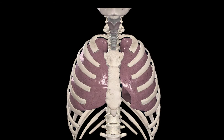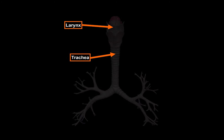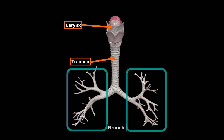Here we see an anterior view of the chest. The Larynx is up here, and inferior to it you'll see the Trachea. Let's go ahead and remove the bones to see them better. As the Trachea descends, it divides into two mini-Tracheas that enter each lung. If we now remove the lungs, you'll be able to see those mini-Tracheas. We call them Bronchi.